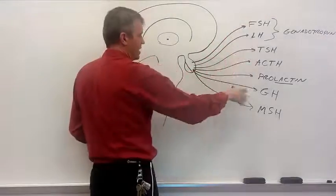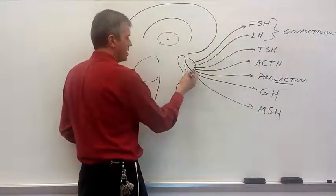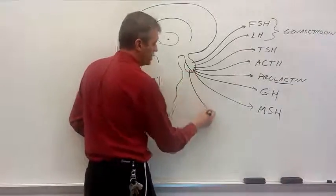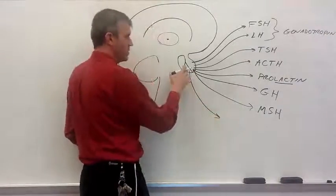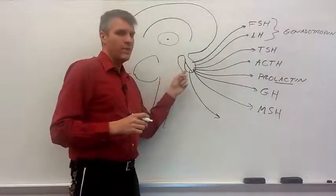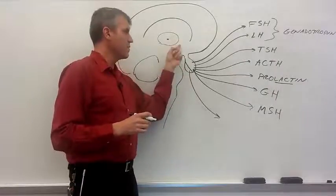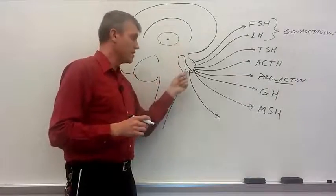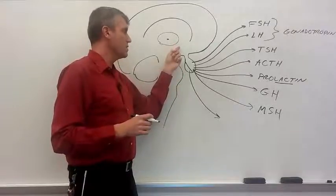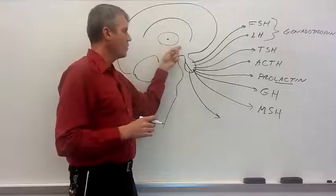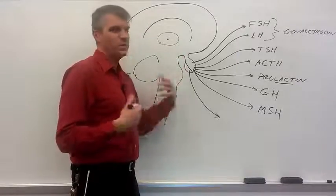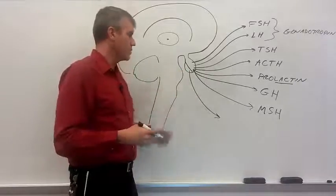That is it for the anterior pituitary gland. Let's talk about the posterior pituitary gland. One thing to remember about the posterior pituitary gland, this does not make the hormones. The hormones are made up here in the hypothalamus for the posterior pituitary gland. They are made by neurons that live up here in the hypothalamus. And then the hormones travel down the axons of those neurons and await release in the axon terminals of those neurons.